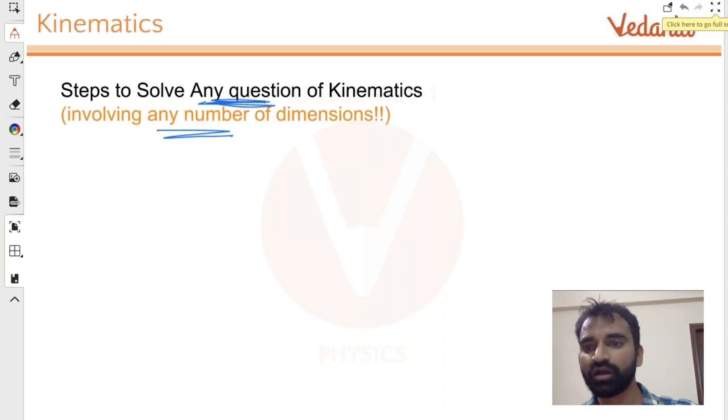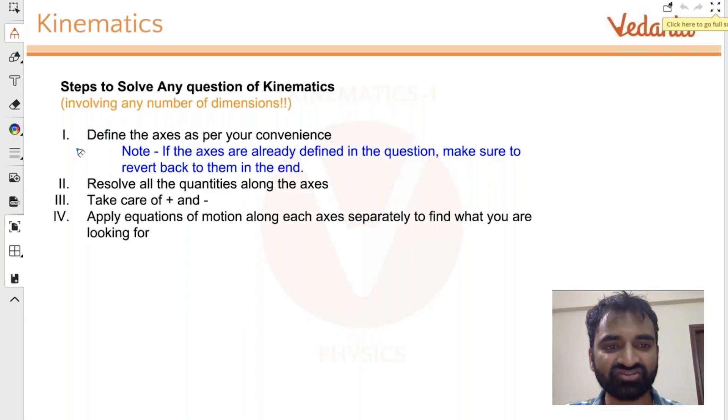Let's find out what these steps are. First step: define the axis as per your convenience, whatever you are comfortable with. There is a side note - in some cases the axis is defined by the question itself. The question tells you this is the horizontal and maybe your quantities are at some angle with the horizontal, so the axis is defined for you. But still you can define your own axis. Keep in mind that later on you will have to revert back to the axis of the question.